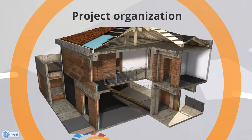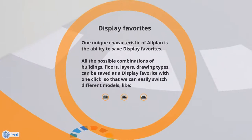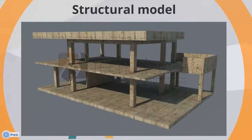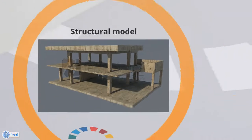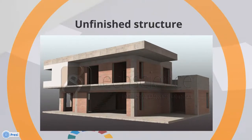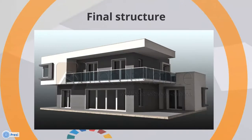Project organization: one unique characteristic of Allplan is the ability to save display favorites. All the possible combinations of buildings, floors, layers, and drawing types can be saved as a display favorite. With one click we can easily switch between different models — like structural model, unfinished structure, or final structure.